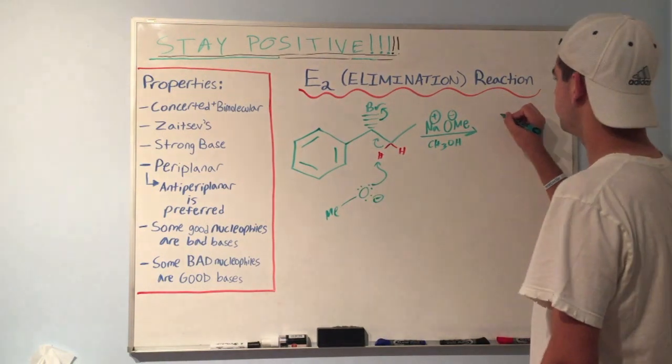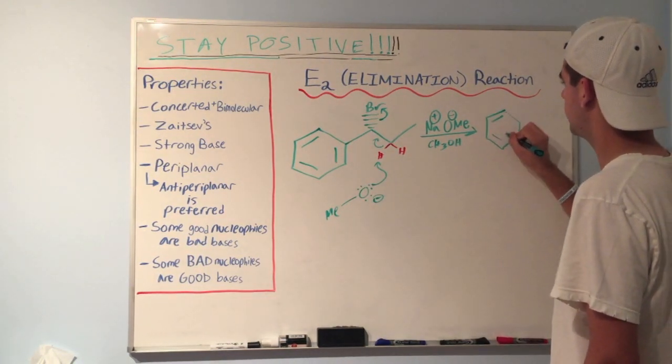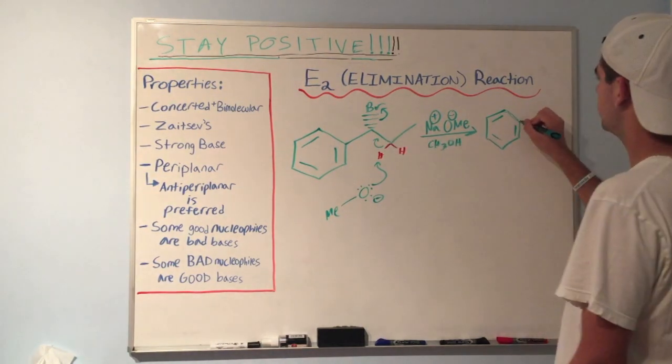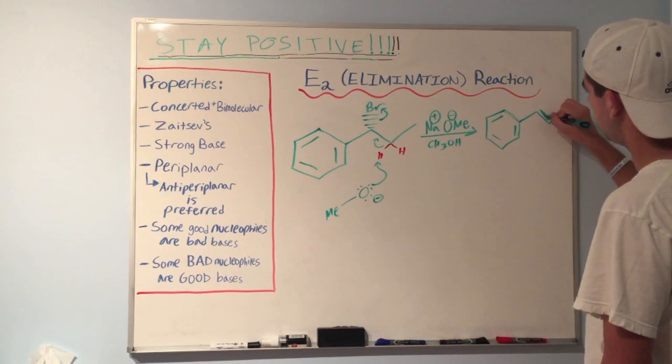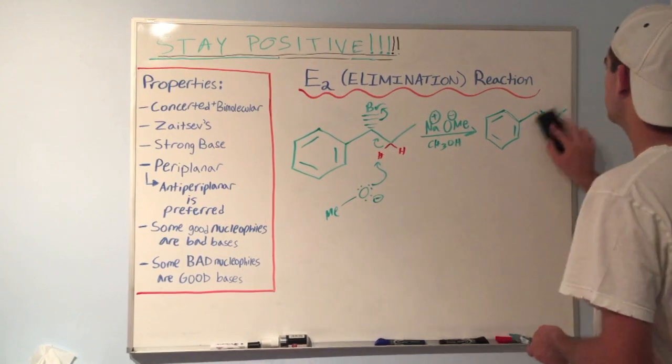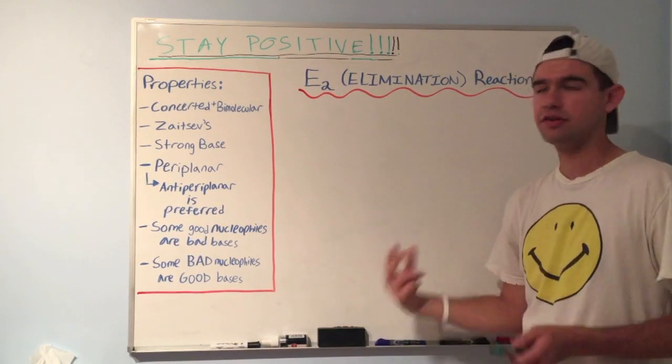So what does our product look like? We still have our best friend benzene right here. And now we have a new carbon-carbon pi bond right there. Hope that's clear. That's a basic E2 reaction mechanism. And now let's go into some of the details.